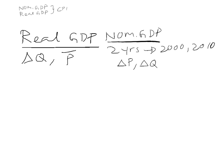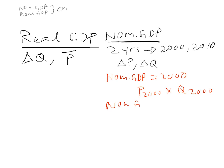With nominal GDP, we allow the price to change and the quantity to change. So nominal GDP for the year 2000 is based on the price level in the year 2000 multiplied by the quantity produced in the year 2000. And nominal GDP for the year 2010 is based on the price level of 2010 multiplied by the quantity of 2010. With real GDP it's going to be different because we're going to fix one of our unknowns.